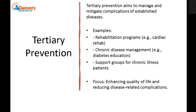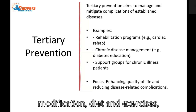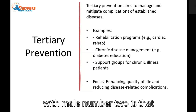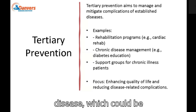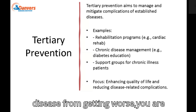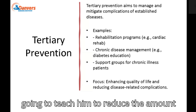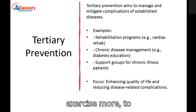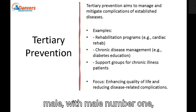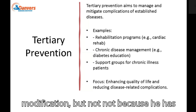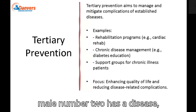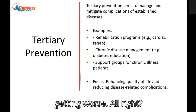For male number two, you're also going to teach about lifestyle modification, diet, and exercise. But the difference is that male number two has a chronic disease — which could be a cardiac problem. Because you want to prevent the disease from getting worse, you teach him to reduce fat intake, exercise more, and modify his lifestyle. So male number one: lifestyle modification to prevent the disease from occurring. Male number two: has a disease and you want to prevent it from getting worse.